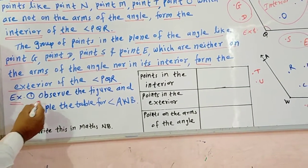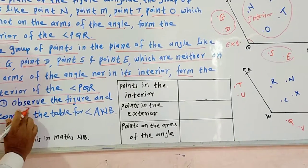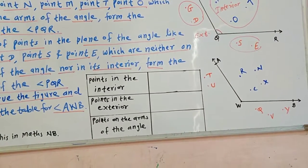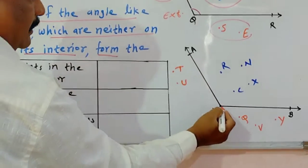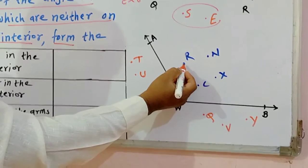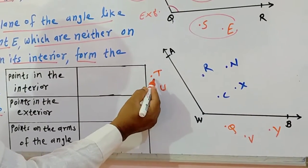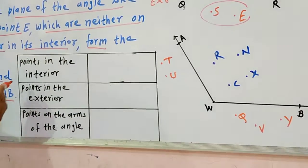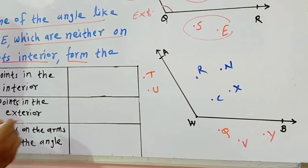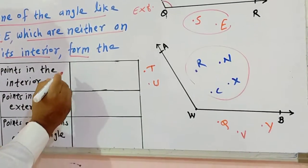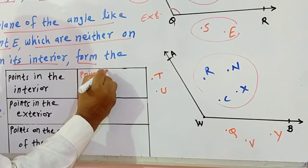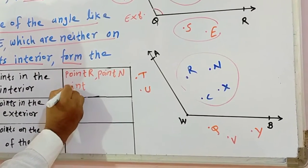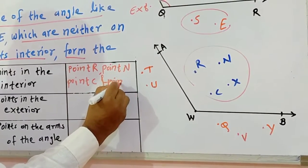Now here is one example. Observe the figure and complete the table for angle AWB. Some points are given here: point R, point C, point X, point T, point U, point Q, point B, and point Y. From this figure we have to complete the table. First, points in the interior — write the names of the points which are inside. These are: point R, point C, and point X.